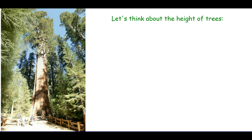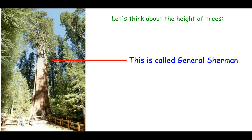We're going to talk about the height of trees. This tree on the left is called the General Sherman. It's in California and it's the largest tree we know of — not by height, as there are taller trees, but including height, circumference, diameter, and radius — basically the largest volume of tree.